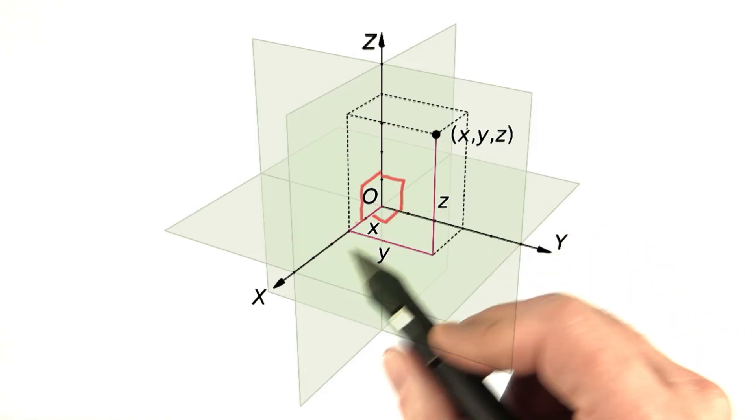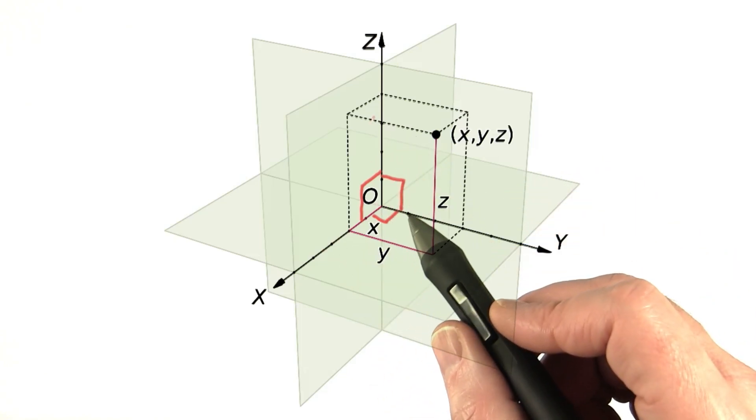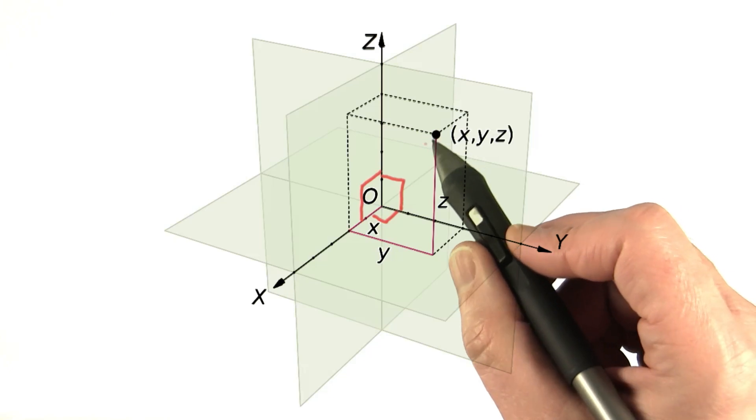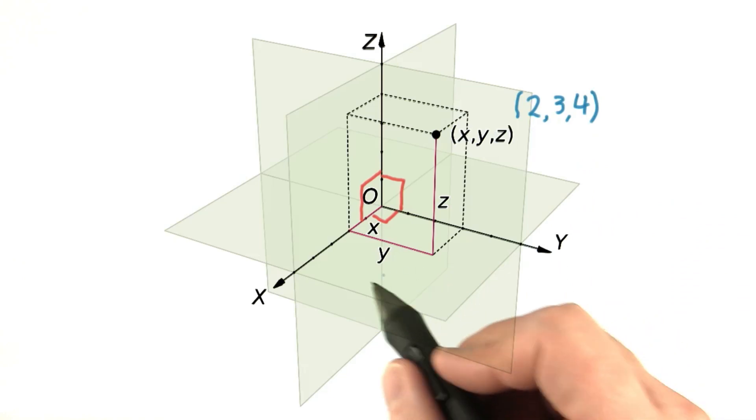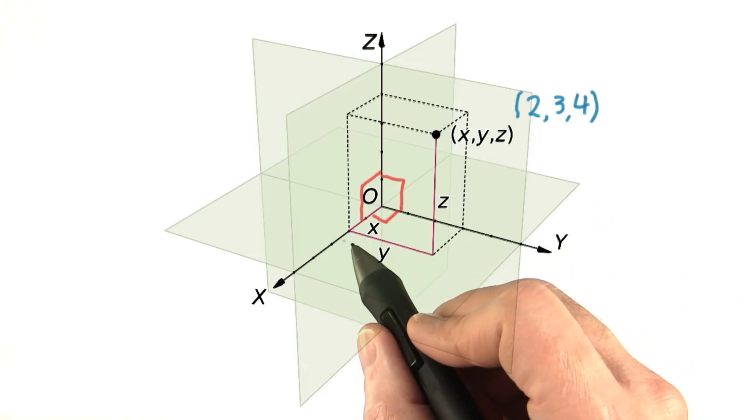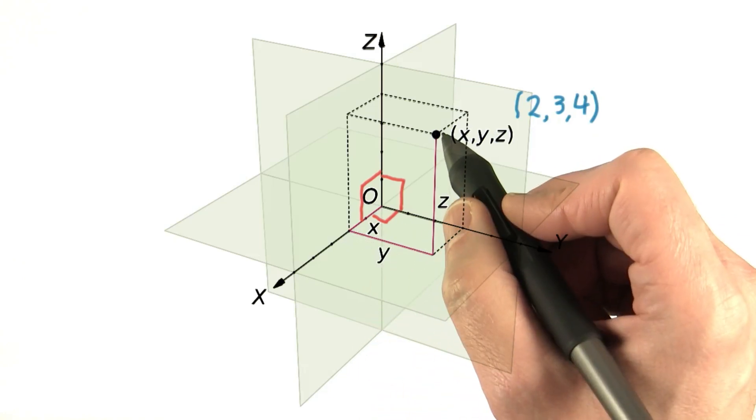Given an origin and three vectors, we can then define the location of any point in space with a triplet of numbers. For example, this point has a triplet of 2, 3, and 4, as it's two units along the x, three along the y, and four along the z.